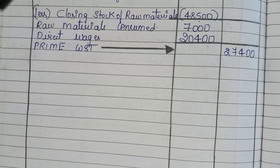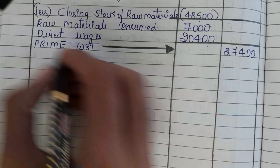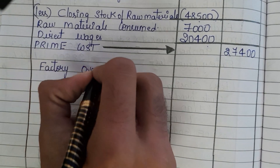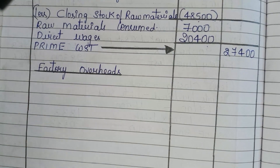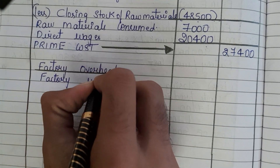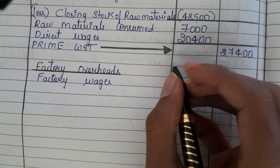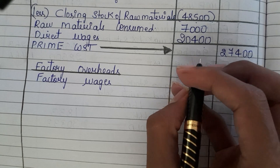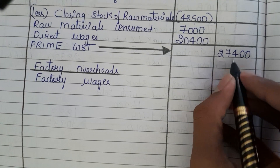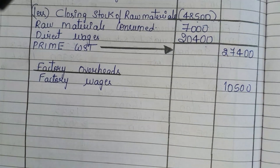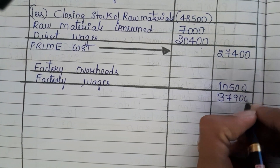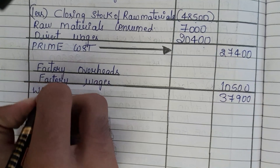For prime cost we need to add factory overheads. In this question the only factory overhead is factory wages. Factory wages is 10,500. Adding 27,400 plus 10,500 gives us 37,900, which is our work cost.